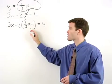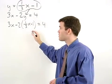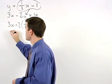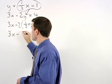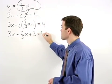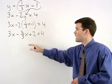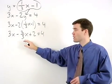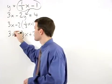Now we can solve for x by first distributing this negative 2 through the parentheses to get 3x minus 2 thirds x plus 2 equals 4. And now we need to get rid of the fraction by multiplying both sides of the equation by 3